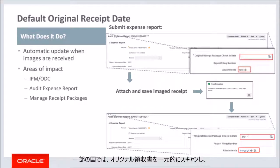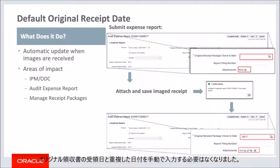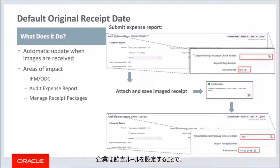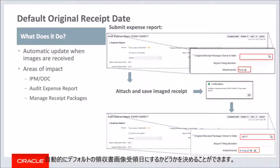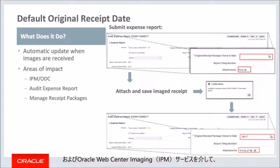In some countries, original receipts are essentially scanned and the date that the image receipts are received is captured and stored. When the corresponding expense report is audited, it is no longer necessary to manually enter a redundant date for the original receipt received date. Companies decide if the receipt package check-in date will automatically default to the image receipts received date by setting up an audit rule. This rule exists on the Create Expense Report Receipt and Notification Rule page. The default receipt date rule enables the automatic population of the original receipt check-in date field.